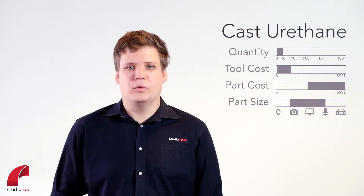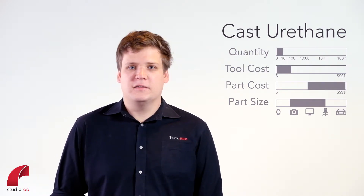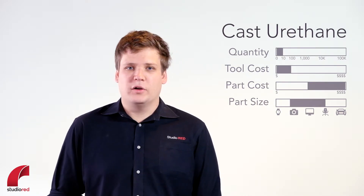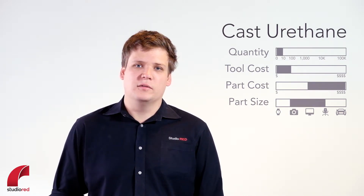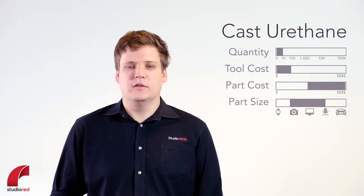Cast urethane, like RIM, uses a two-part liquid which is mixed and injected into a mold where it hardens and is extracted. The difference is the mold is typically made out of soft silicone, which is cast over a master. It requires much more hand finishing because the silicone mold allows for more flash. Also, the silicone mold is only good for about 20 pieces, so it's not a very good long-term solution.